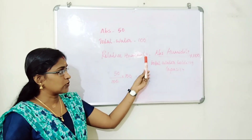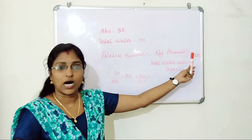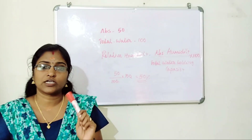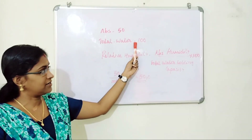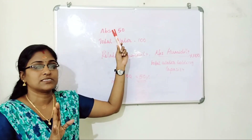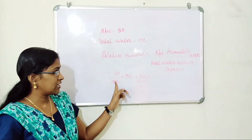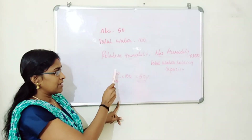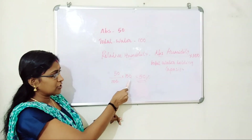The formula is: Relative humidity = (Absolute humidity ÷ Total water holding capacity) × 100. For example, if the relative humidity is half of the total water holding capacity, and the total water holding capacity is 100, then absolute humidity is 50. So relative humidity = 50 ÷ 100 × 100 = 50%.